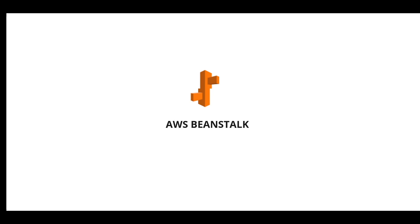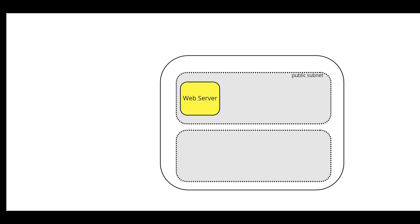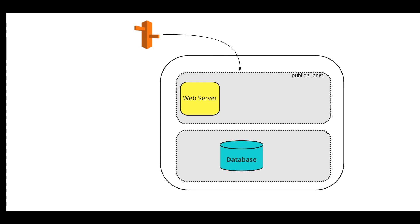Let's talk about the basic way to deploy an application in AWS. You create your VPC, you create public subnet and private subnet, you create your EC2 instance in the public subnet and configure it to be a web server. On the private subnet you configure the database, and then you configure the DNS in Route 53 to point to the web server so any user from the internet can hit the web server.